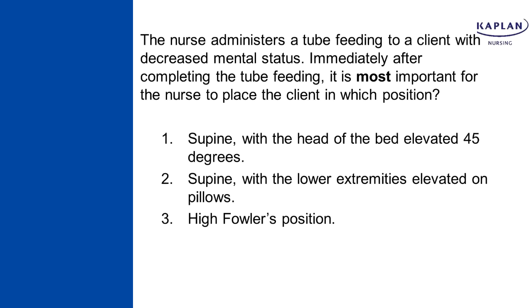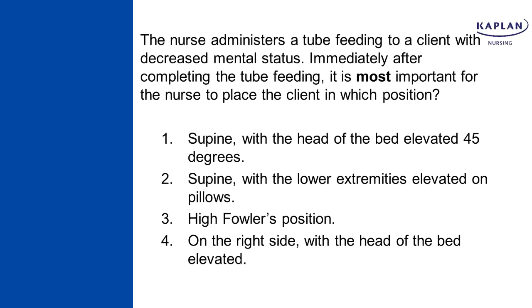Number three: high Fowler's position, which is 60 to 90 degrees — the patient is sitting upright. That will prevent aspiration; I don't mind that choice. Number four: on the right side with the head of the bed elevated. I have three answer choices where the patient is basically elevated, so it must be the right-side lying position that makes the real difference. Lying on the right side promotes emptying of the stomach, so this choice both prevents aspiration and promotes stomach emptying. Therefore, the correct response is number four.